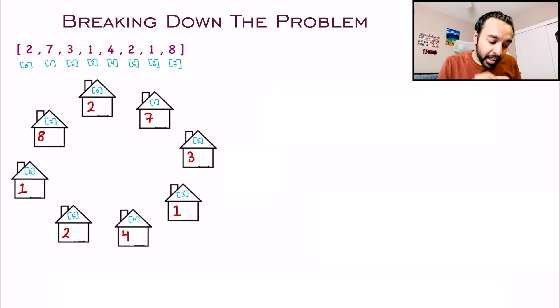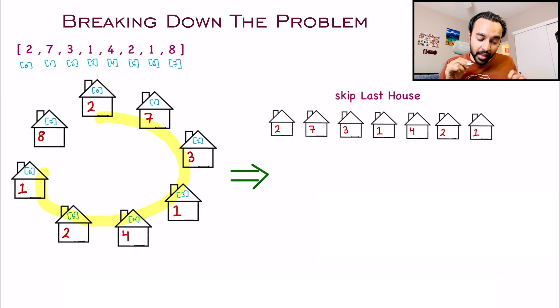So what I can do is, I can try to break down this problem into two steps. In the first step, what I will do is, I will skip the last house and I will go in a clockwise direction. So when I skip the last house, then I get my array like this and all the houses are now once again arranged in a row.